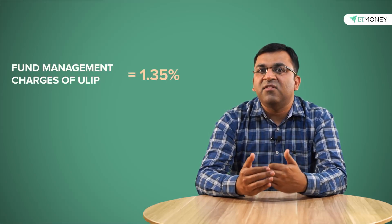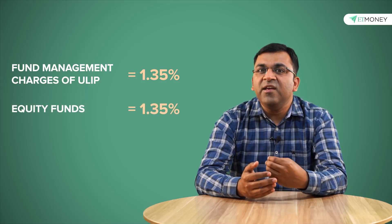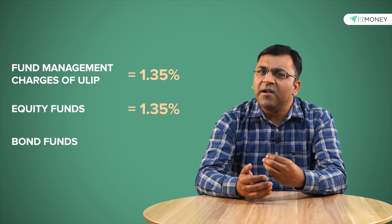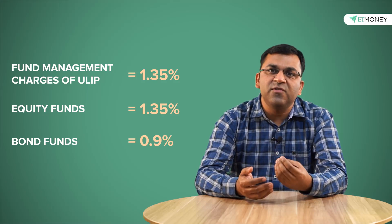A ULIP's fund management charges are capped at 1.35% as per the IRDA rules. This 1.35% is generally what most insurers charge for equity funds while bond funds are a bit lower at around 0.9%.